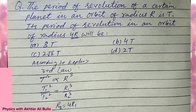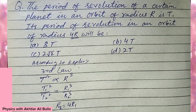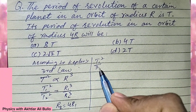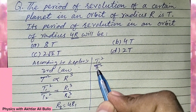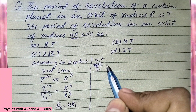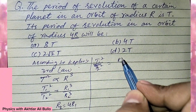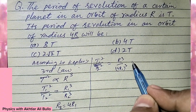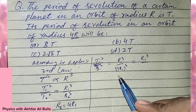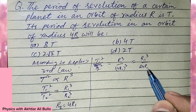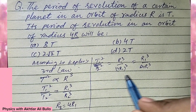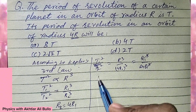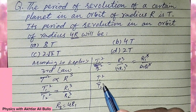which is 4r1. So T1² / T2² is equal to r1³ / (4r1)³, which is equal to r1³ / 64r1³. The cube of 4 is 64, so r1³ cancels with r1³.